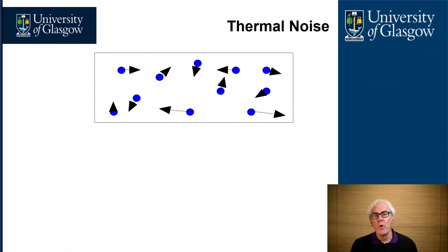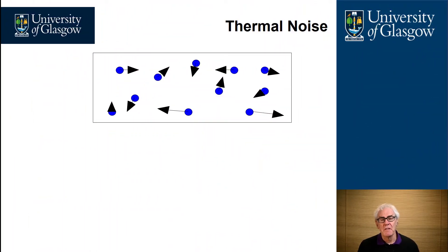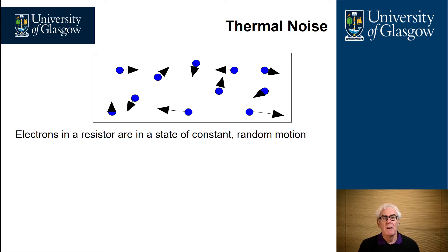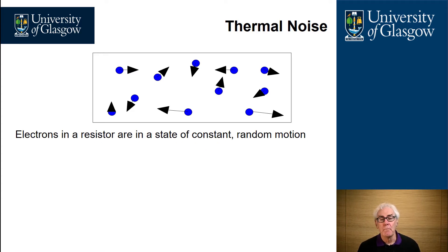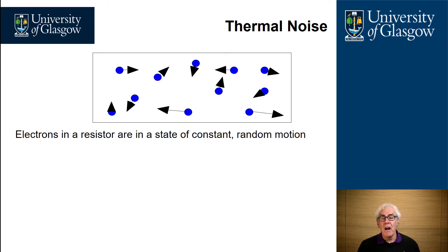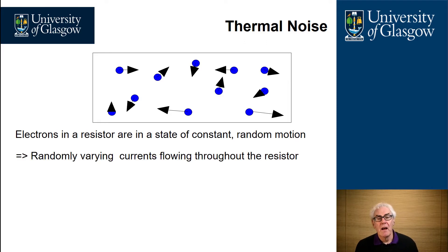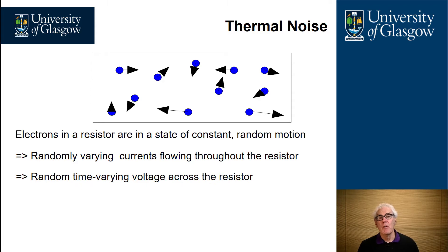Thermal noise is due to the random movement of electrons in any particular physical substance. Electrons in a resistor are in a state of constant random motion because there is no connection. If you have a resistor just sitting on the bench, the electrons are moving around the body of that resistor but not coming out of either end. There are effectively random varying currents flowing throughout the resistor, and over time these randomly varying currents give rise to a small voltage across the resistor.